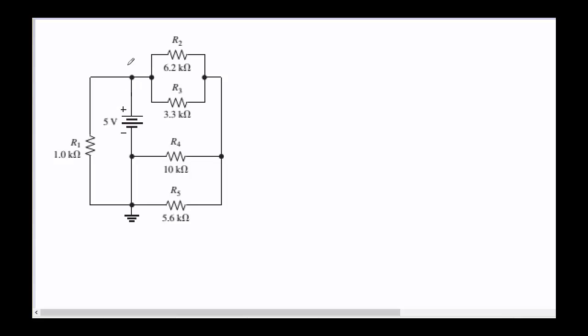We have here one major node with 1, 2, 3, 4 elements — same thing for this node and this node. So we have 3 major nodes, and the branches or lines between these major nodes have distinct currents. Since this is a source and everybody else is just a power consumer, we will assume that the source is providing the current and everybody else is consuming it.